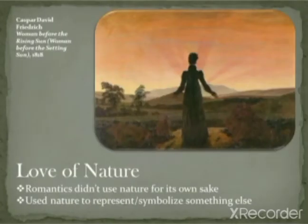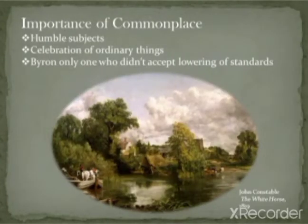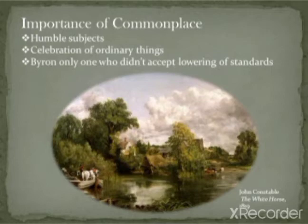The love of nature is evident in the poetry of Wordsworth, Coleridge, Shelley, and Keats — in all the Romantic poets and painters. Romantics didn't use nature for its own sake but used nature to represent and symbolize something else. Humble subjects — the poor leech-gatherer, a solitary reaper — became the heroes of art and literature. The only poet who didn't accept a lowering of standards was Lord Byron, who wrote about kings and freedom fighters.